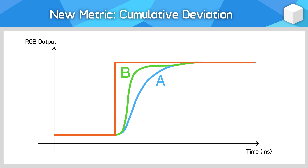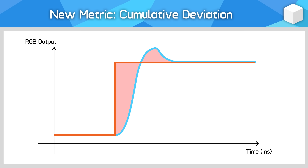Transition B is closer to the ideal response because it completes more of the transition faster. Transition A will look worse visually because it's further away from the final value for a longer time. The solution to quantifying these differences is measuring the area between the ideal response and the measured response — we're calling that cumulative deviation. Cumulative deviation produces a number that is smaller the closer the transition is to looking like an ideal instant response, and this includes overshoot. Cumulative deviation numbers will be larger if overshoot is higher and takes more time to settle back to the ideal value.